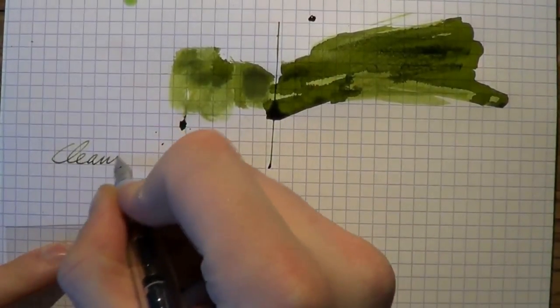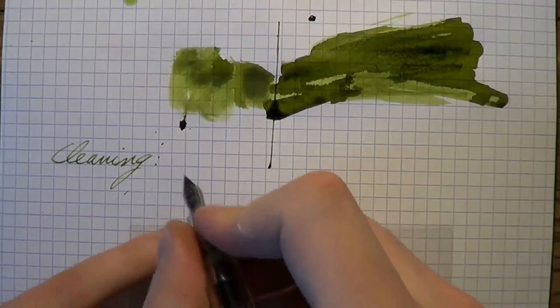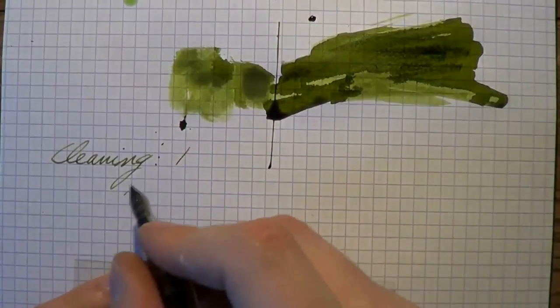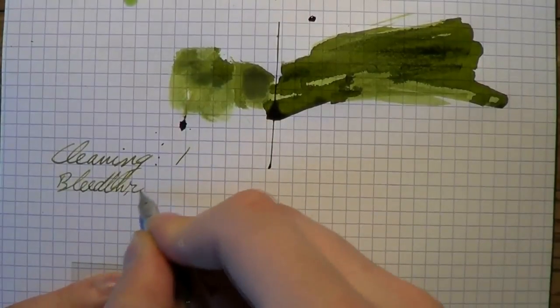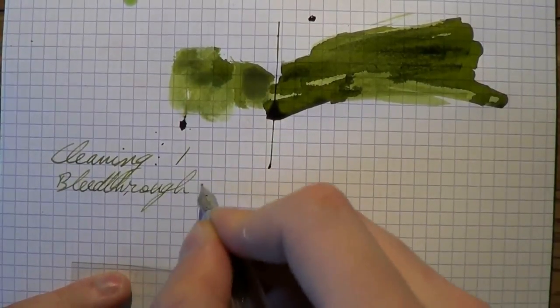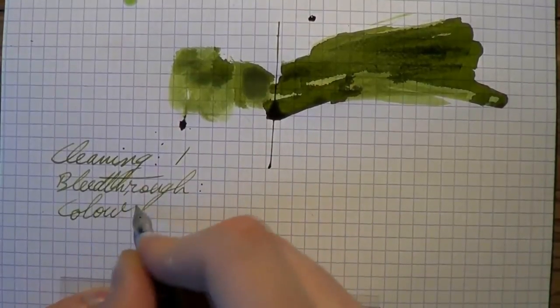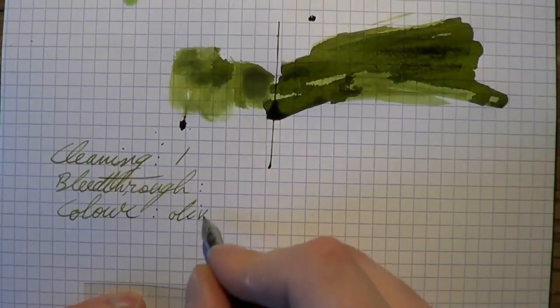However, I have asked Aziza who knows a lot about ink and uses a lot of ink about her opinion, and she says it's really easy to clean, so I'm going to give this full marks there. Then we have bleed through, and obviously that's something we'll have to see a bit later. And then there's color. Well, color is an olive green, I think that's safe to say.